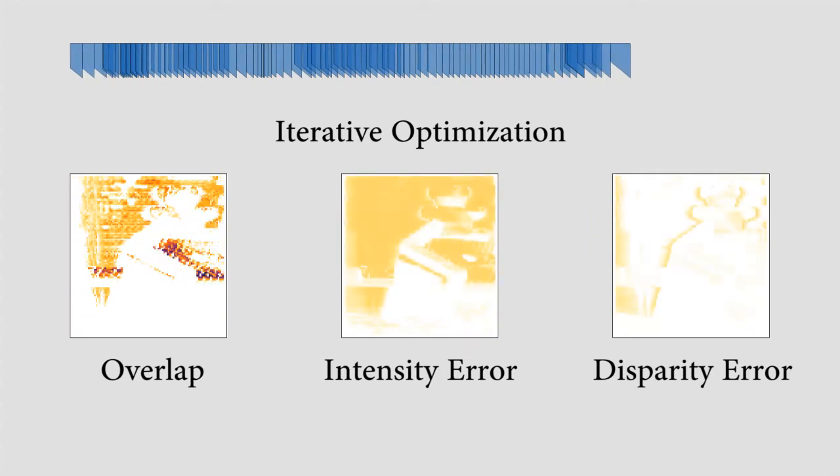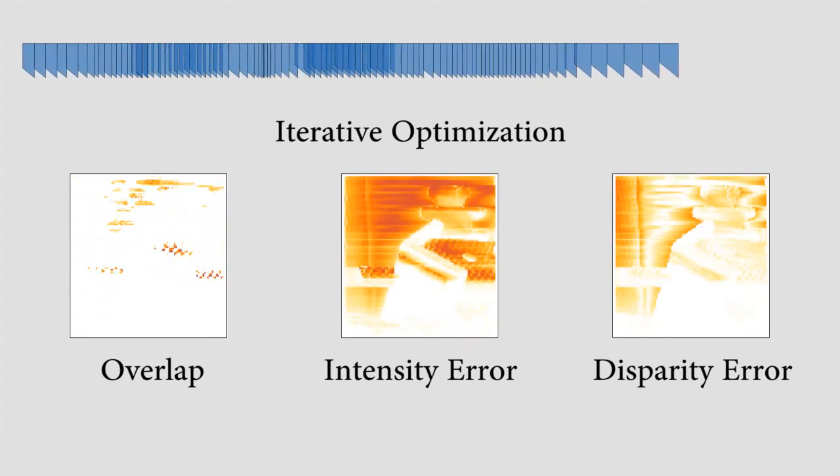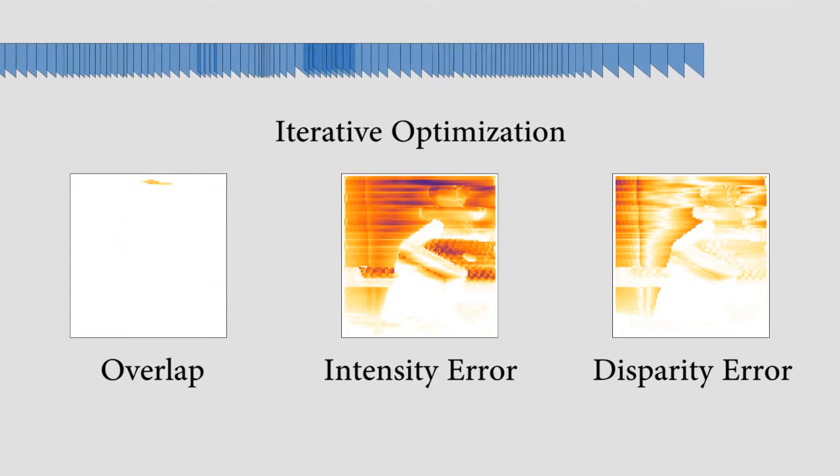This can cause overlaps, as we can see here for one row of the input image. Therefore, we iteratively remove overlaps by moving and scaling the prisms. This, in turn, introduces small intensity and disparity errors.